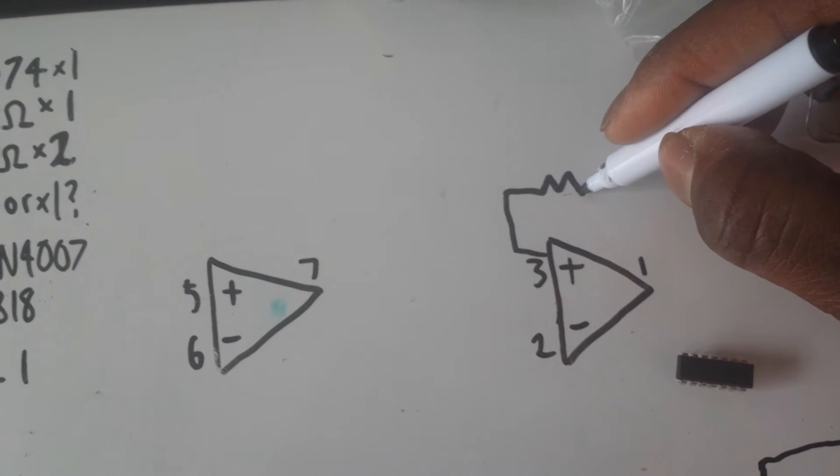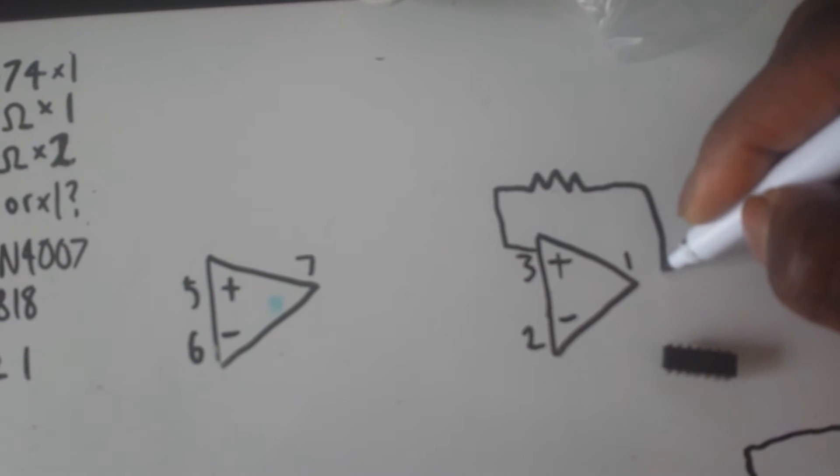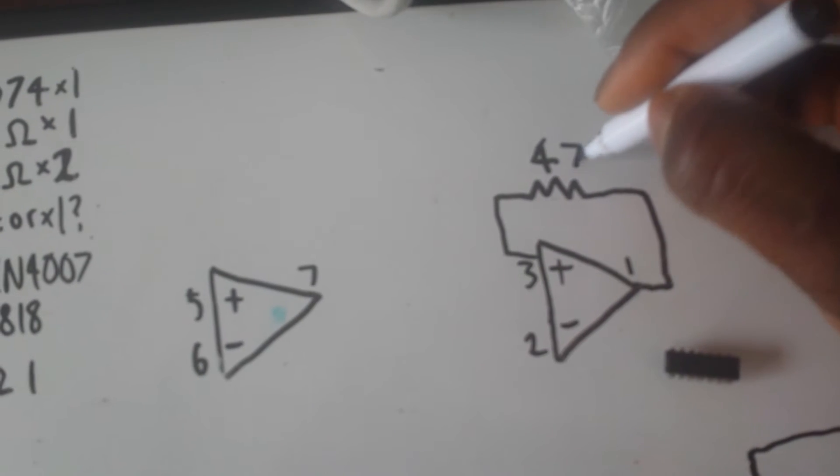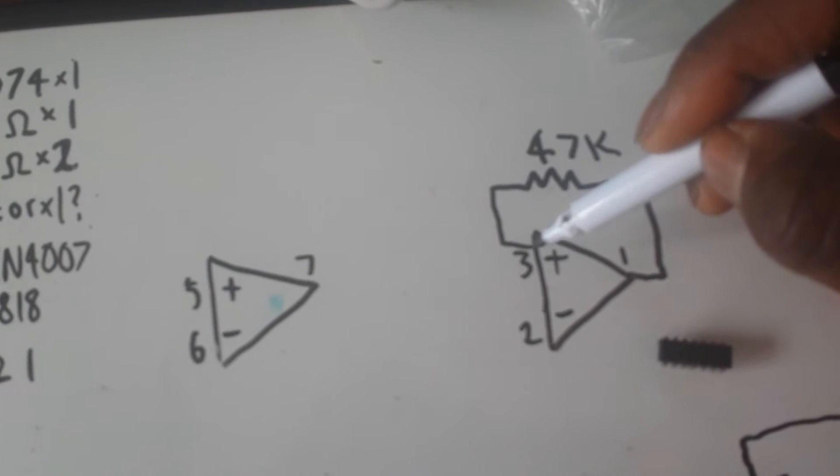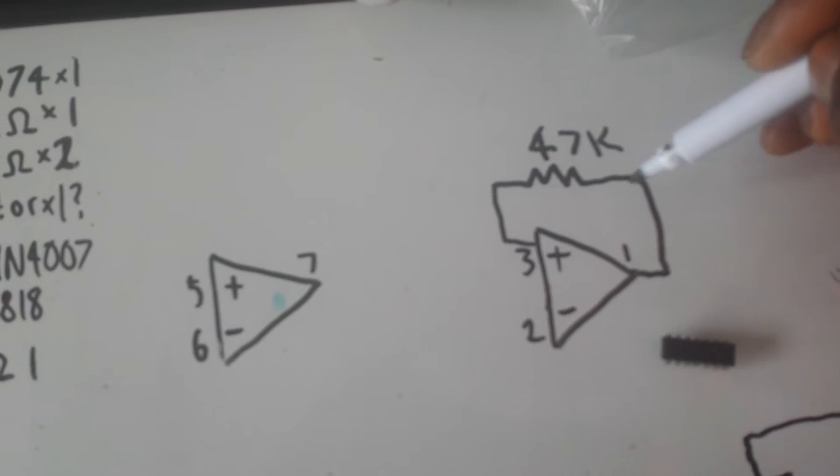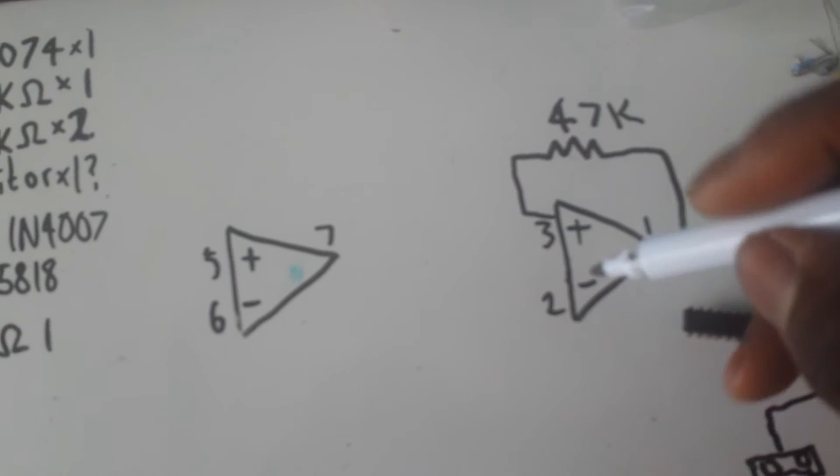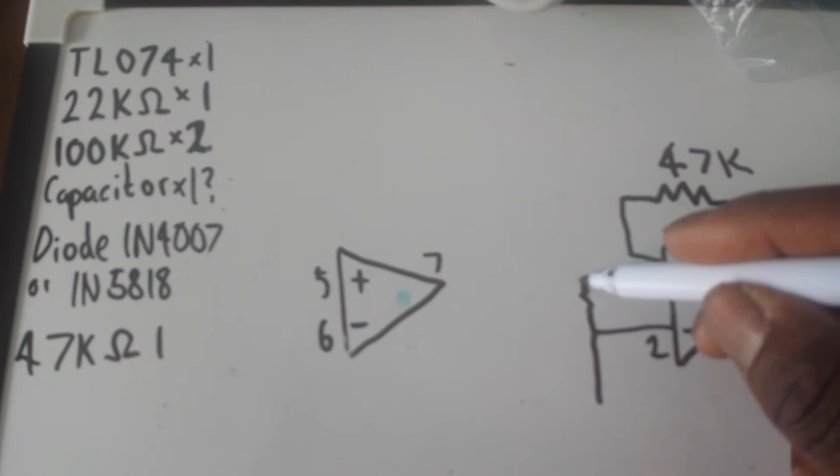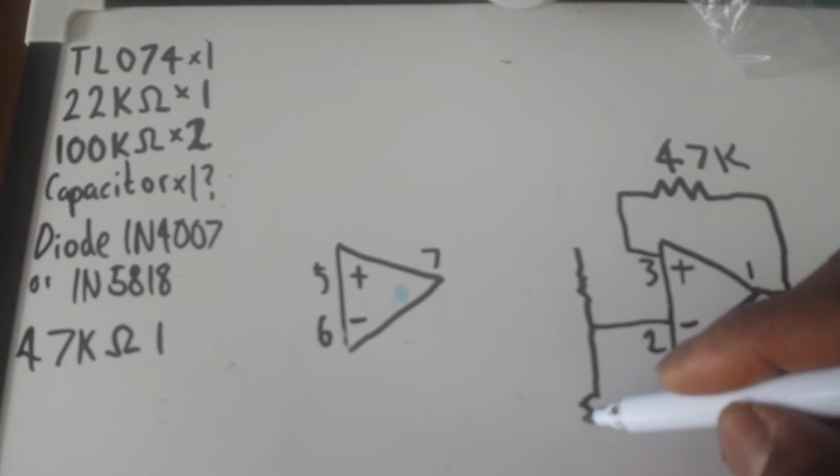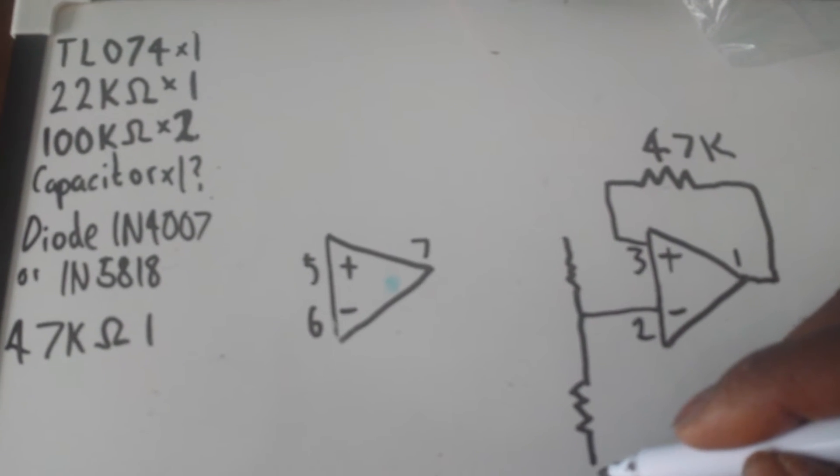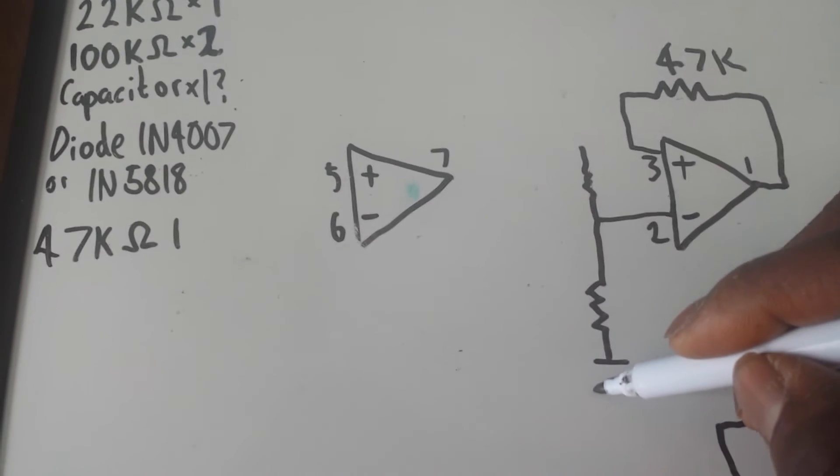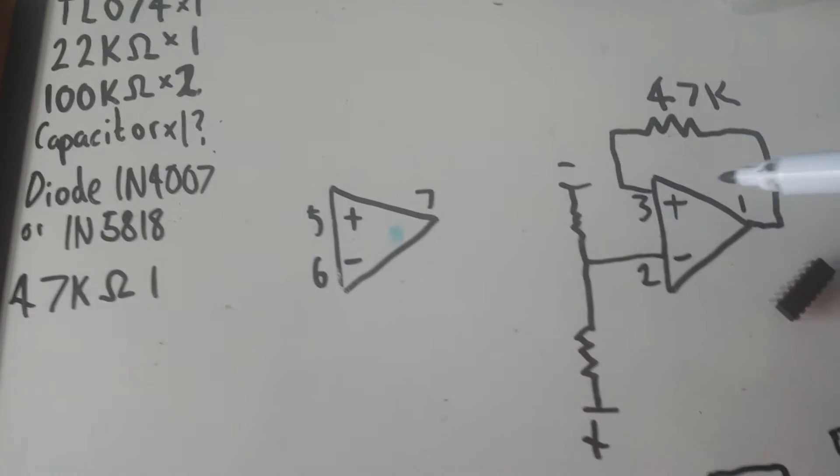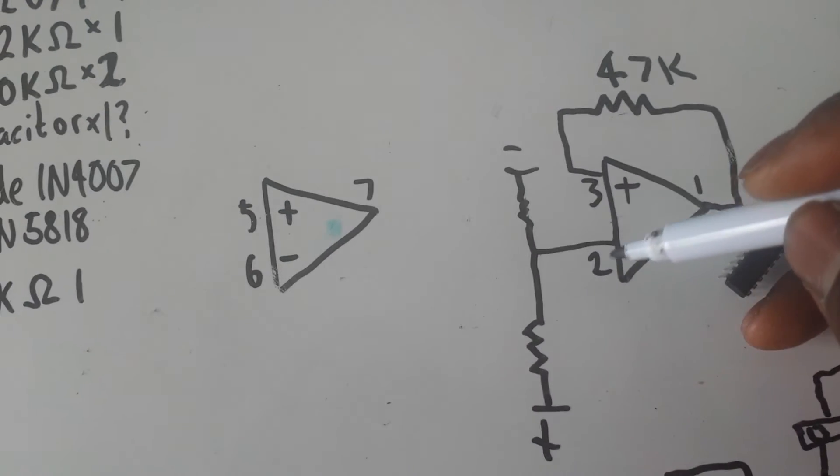The first thing what we'll do is we'll put our 47k resistor in, and that will go from the non-inverting side of the first op-amp to the output. And on pin 2, we'll take two resistors. One will go to the plus voltage, one will go to the minus voltage, and this will create a voltage divider.